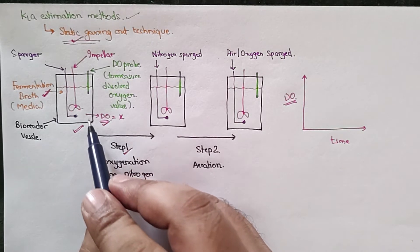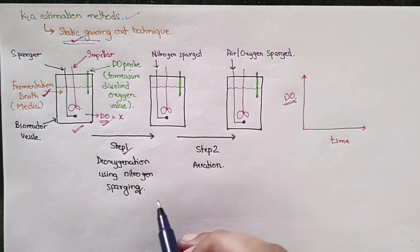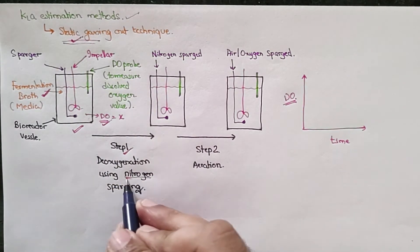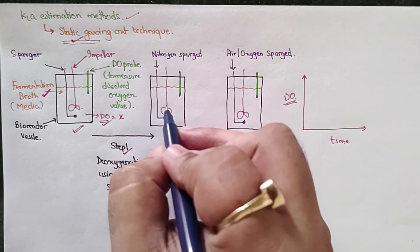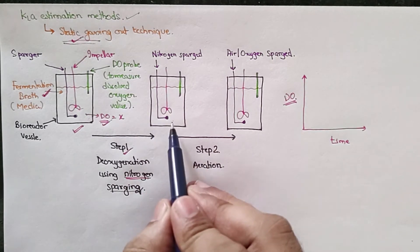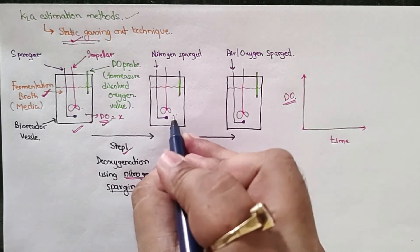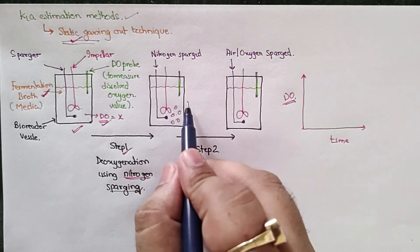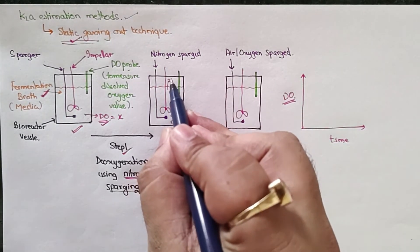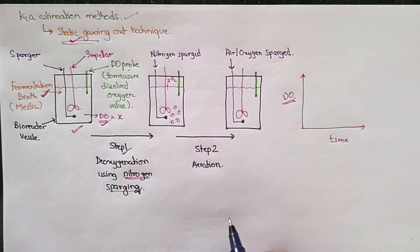How do you do that? You will sparge nitrogen into it. Once the nitrogen goes into the media, you are sparging nitrogen into the system. This is the nitrogen going up, so it will be transferring, and from this side there will be removal of the oxygen.